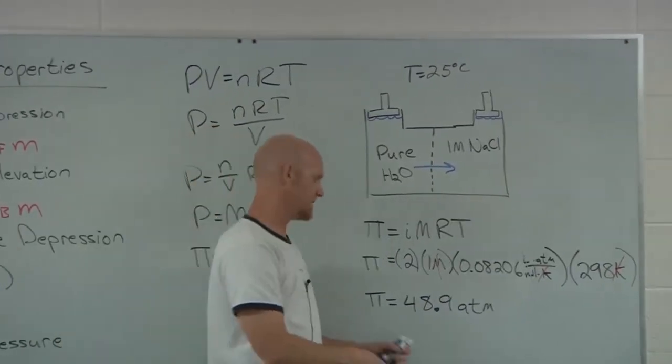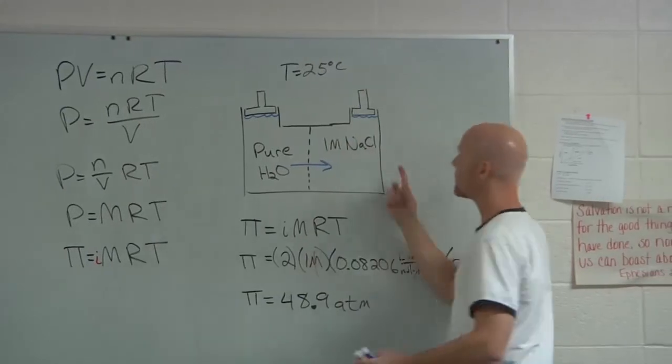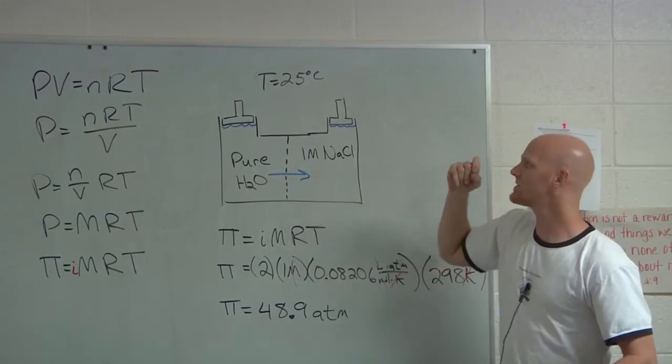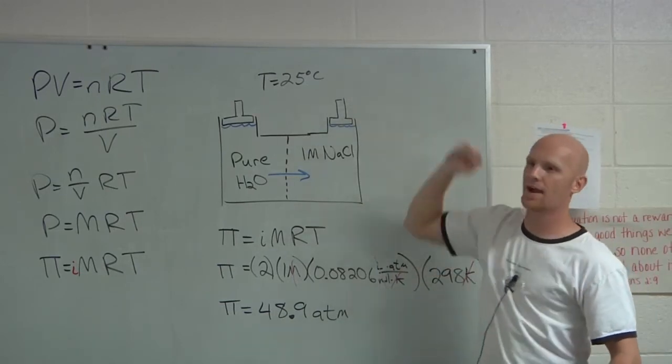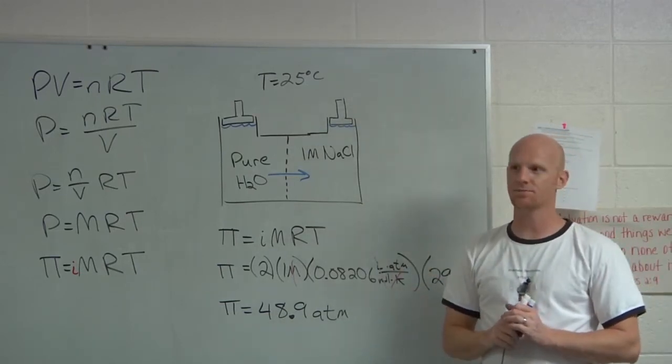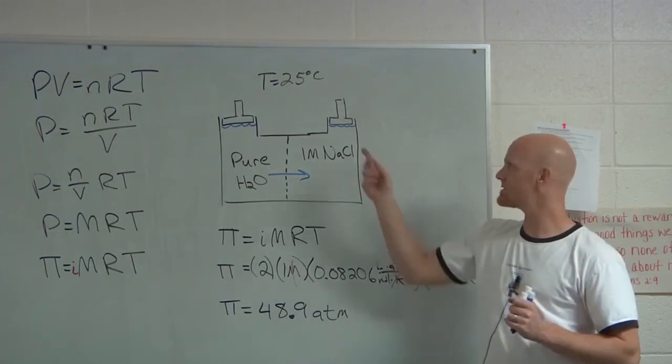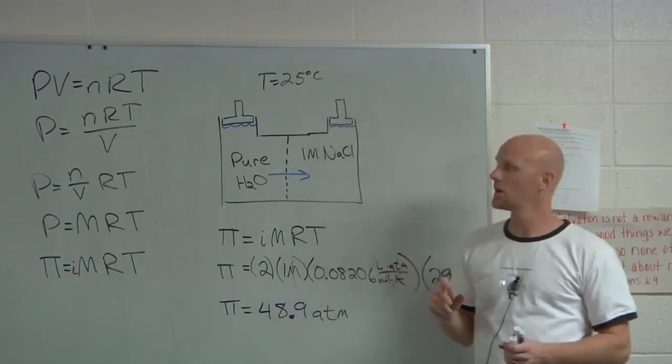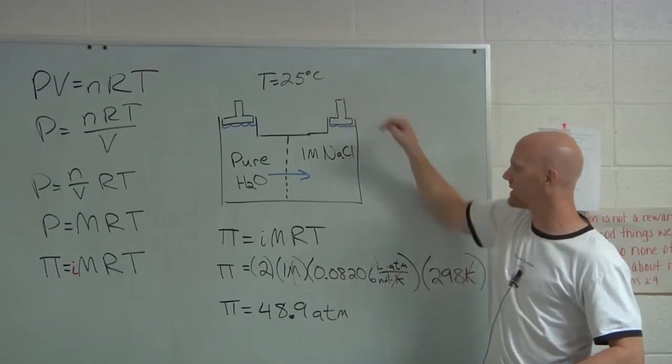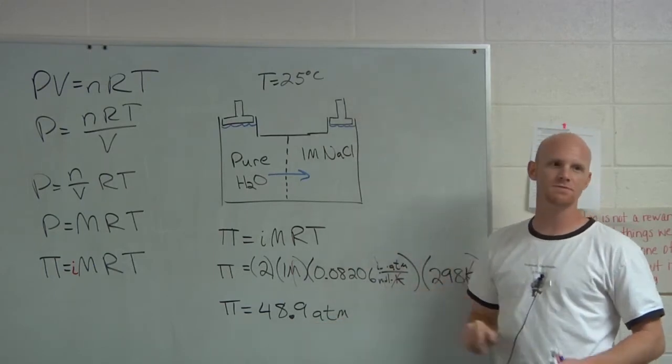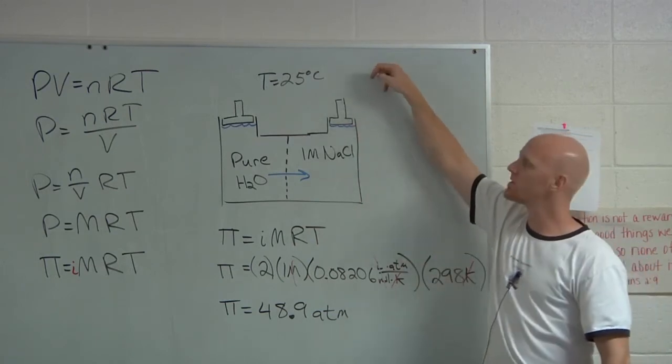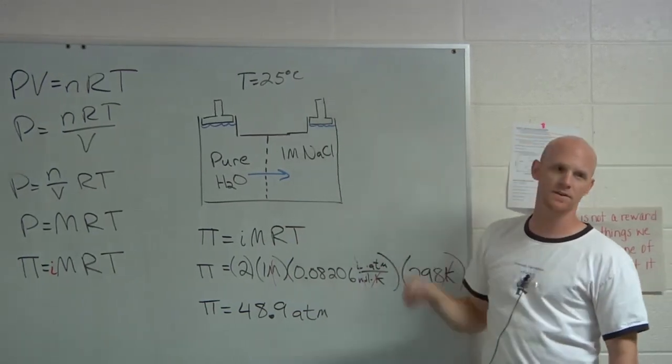So let's look at this for a minute. So this thing is going to want to push up on this piston with 48.9 atmospheres. What's going to happen if I push back with 20 atmospheres of pressure? Which way is the piston going to move? It's still going to move up. Cool. What if I push back with exactly 48.9 atmospheres? Then it's not going anywhere. It's balanced.